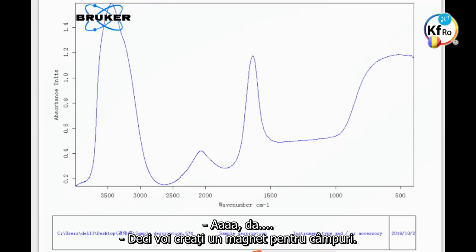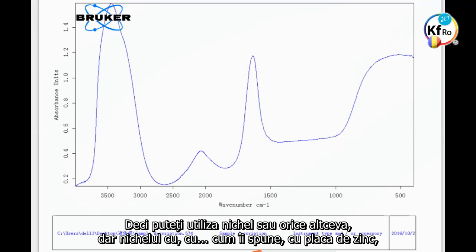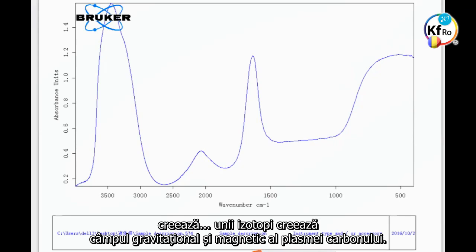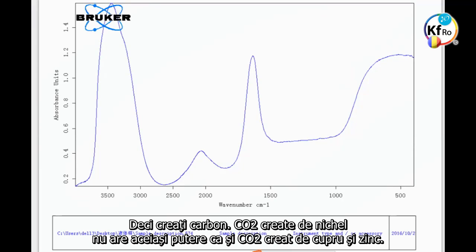So you create a magnet of the fields, so they can use nickel or anything else. But the nickel with the zinc plate, some of the isotopes are creating the gravitational magnetic field of the plasma of the carbon. So you create a copper, but your CO2 created by nickel is not the same strength as the CO2 created by copper and zinc.